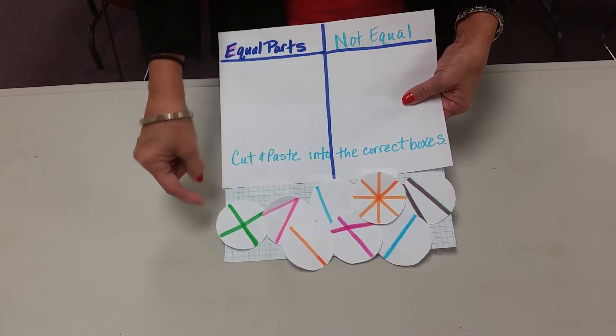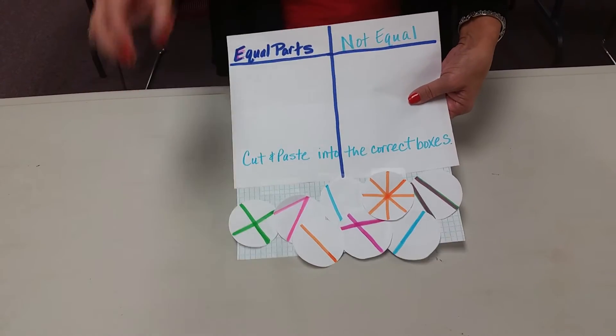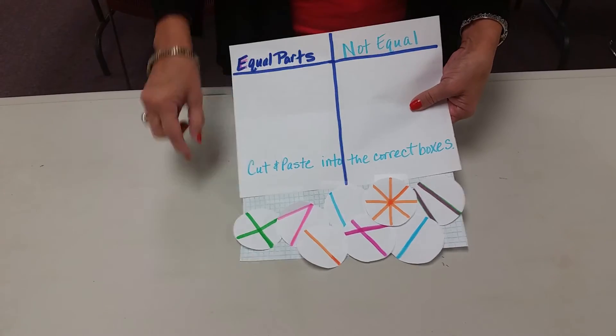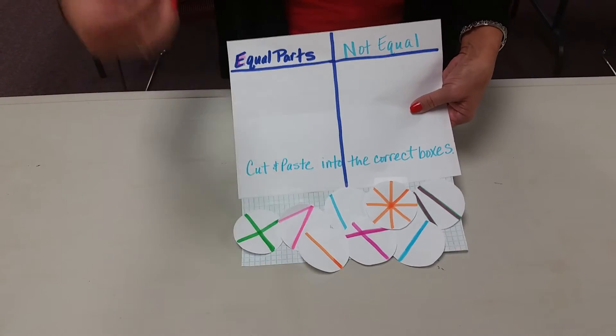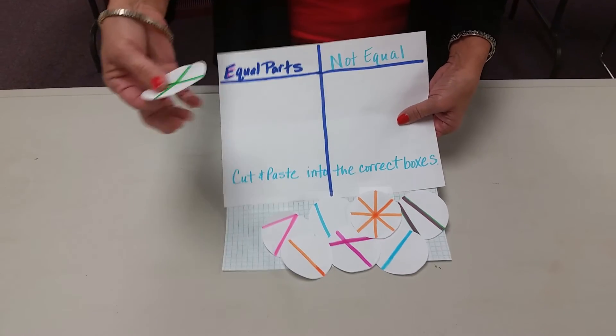Students would go ahead and cut out their circles. We're going to create parts, so they will be marked where you can see if they are equal or not. Then your students are going to take them and place them.